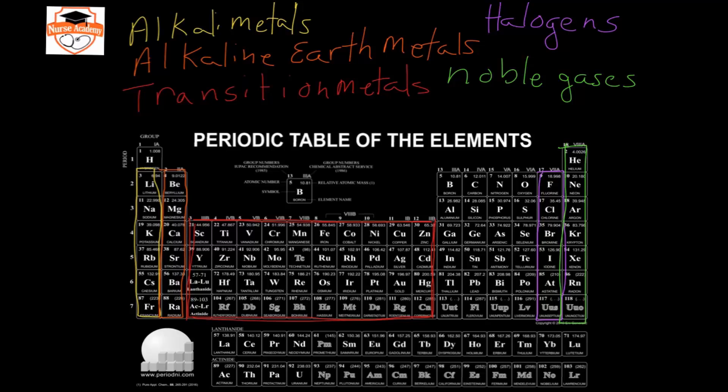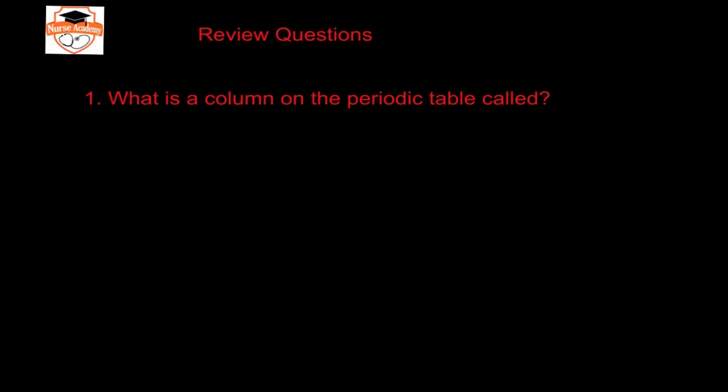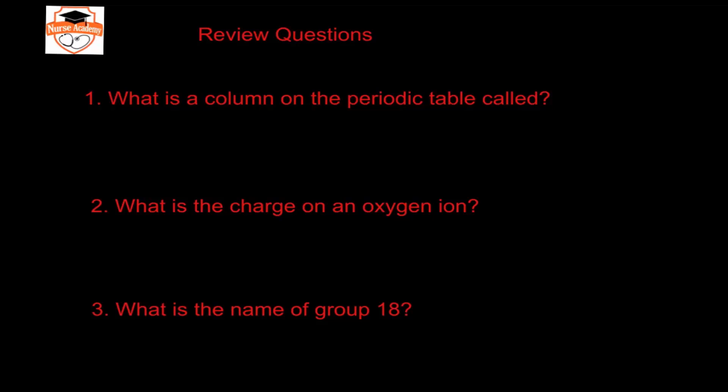This slide has three review questions. Please pause the video, take some time to think about and answer them on your own, then hit play and we'll discuss the answers. Question one: what is a column on the periodic table called? Question two: what is the charge on an oxygen ion? Question three: what is the name of group 18?